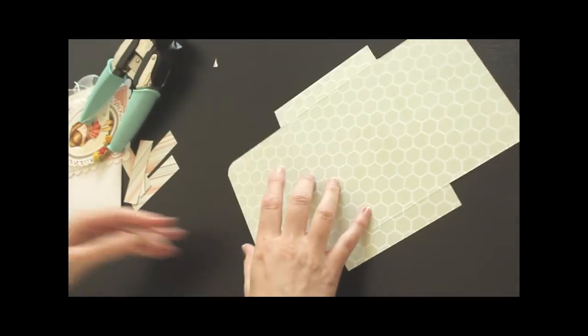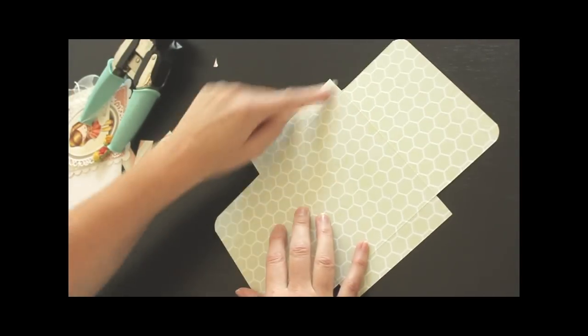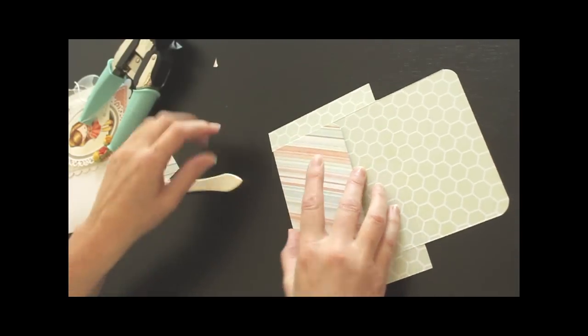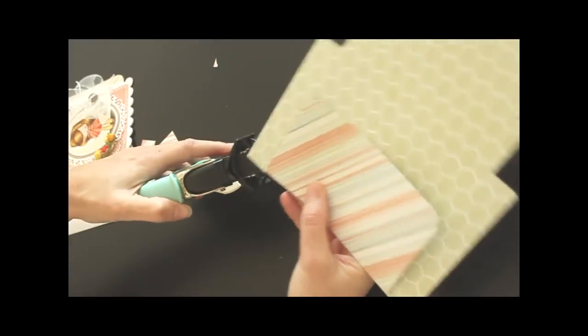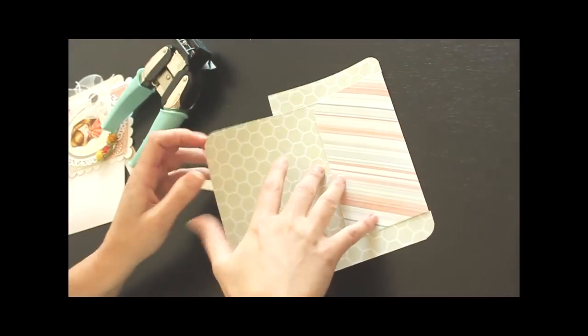And to get the corners on the flaps, just fold your sides in, and round those corners as well.